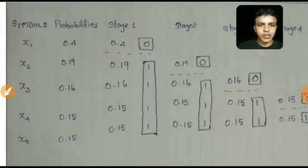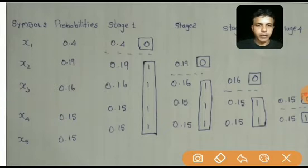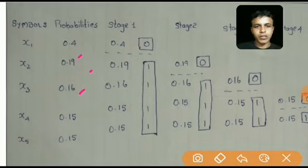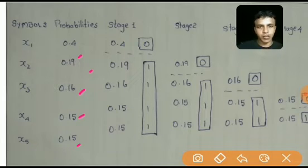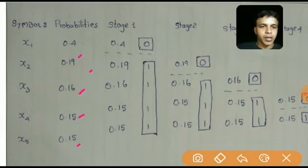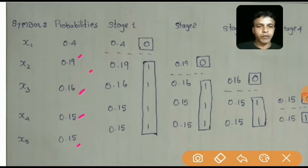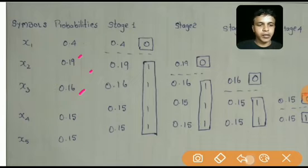So x1, x2, x3, x4, x5 are with probabilities 0.4, 0.19, 0.16, 0.15, 0.15. Since they are already in decreasing probability, I am not going to make any change in the order. Now in Stage 1 we have to divide these probabilities into two parts: the upper part and the lower part.